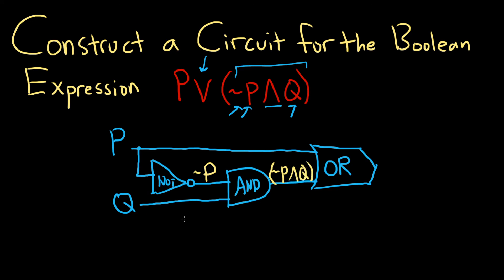Because we have NOT P and Q entering this gate. So now we have P OR this one here. So that's going to give us P OR not P and Q. And that gives us the result, which we started with. So everything looks perfectly okay. I hope this video has been helpful.